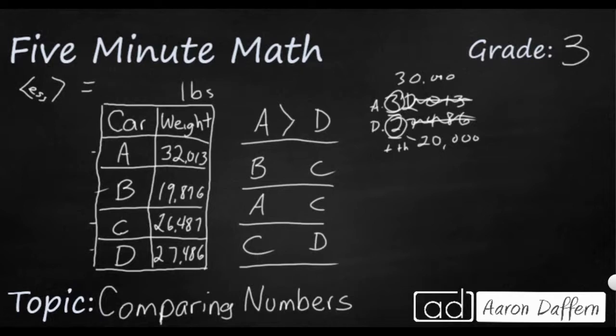Let's do the same thing for the second one, B and C. So I'm going to write B right here. And I'm going to write 19,876. And my C number which is 26,487. Once again we're going to look at the largest place value in either number.